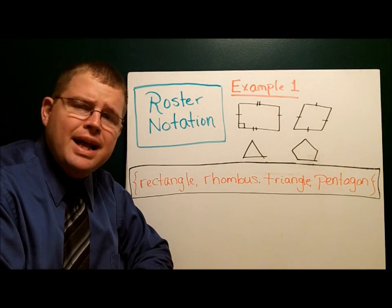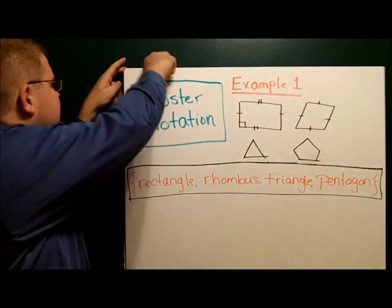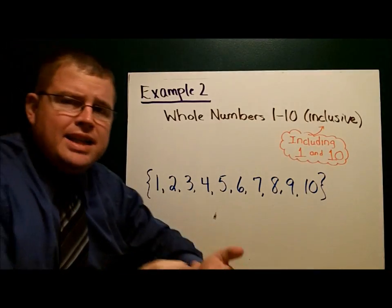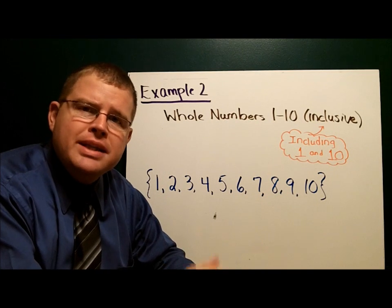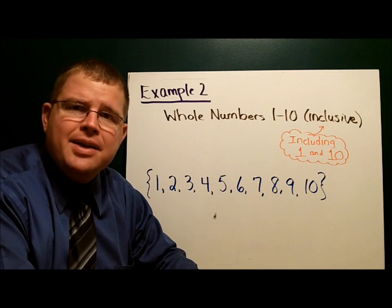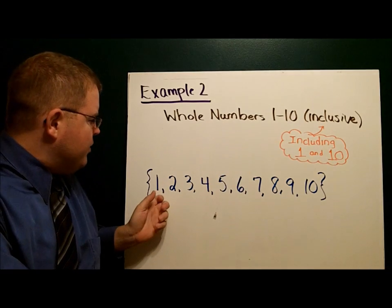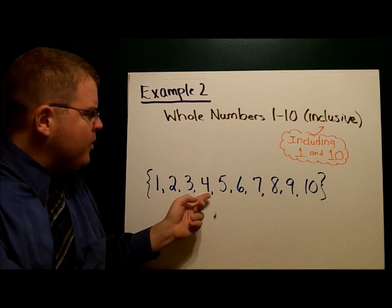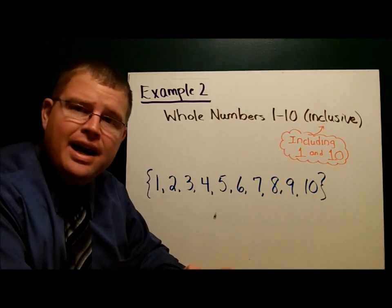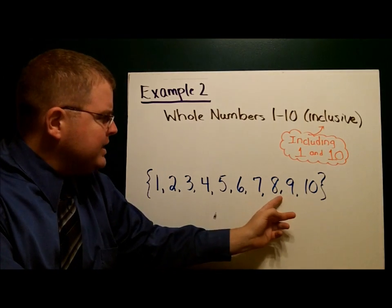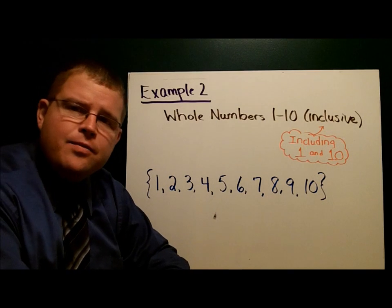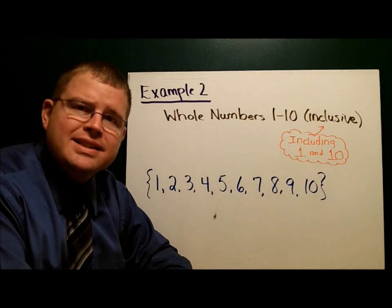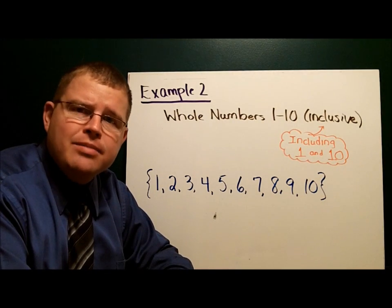Our second example asks us to list some whole numbers. The whole numbers from one to ten, inclusive. Inclusive means including, so it means from one to ten, including one and ten. Here they are: one, two, three, four, five, six, seven, eight, nine, ten. Notice each one is separated by a comma, and we have our braces at the front and the back to show that this is a set.